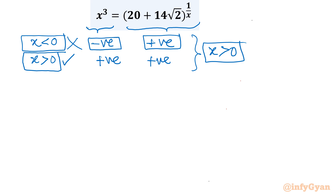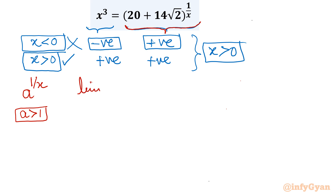Now let's discuss the LHS and RHS graphs. The graph of the exponential function is of the form a^(1/x) where a > 1. Checking the limit: as x tends to 0, a^(1/x) tends to infinity. So the graph comes down from infinity near x = 0.